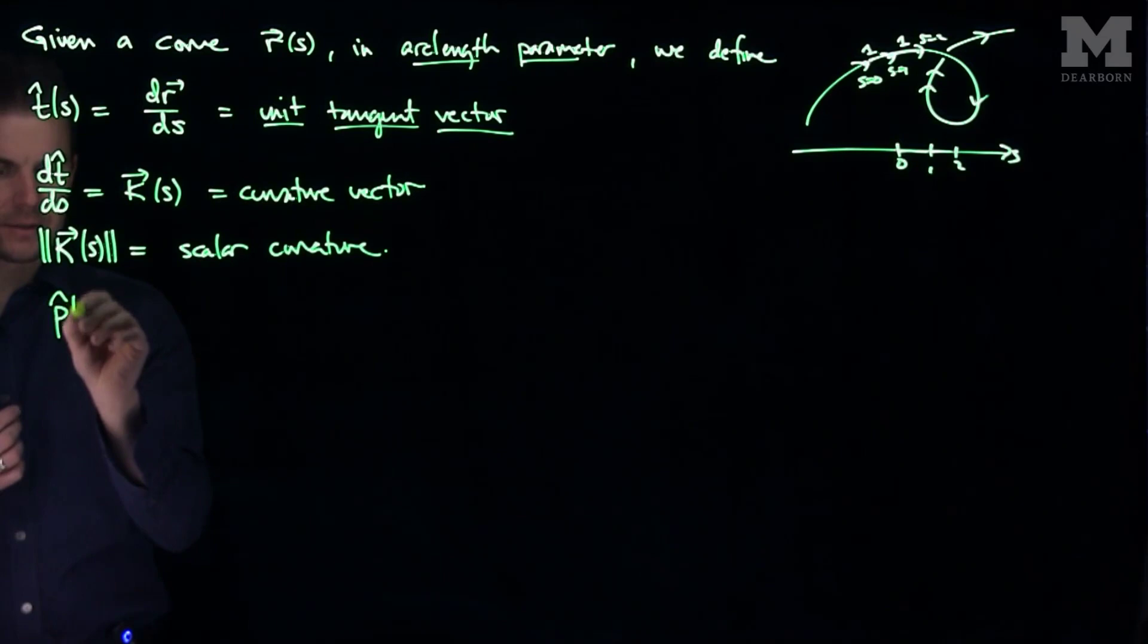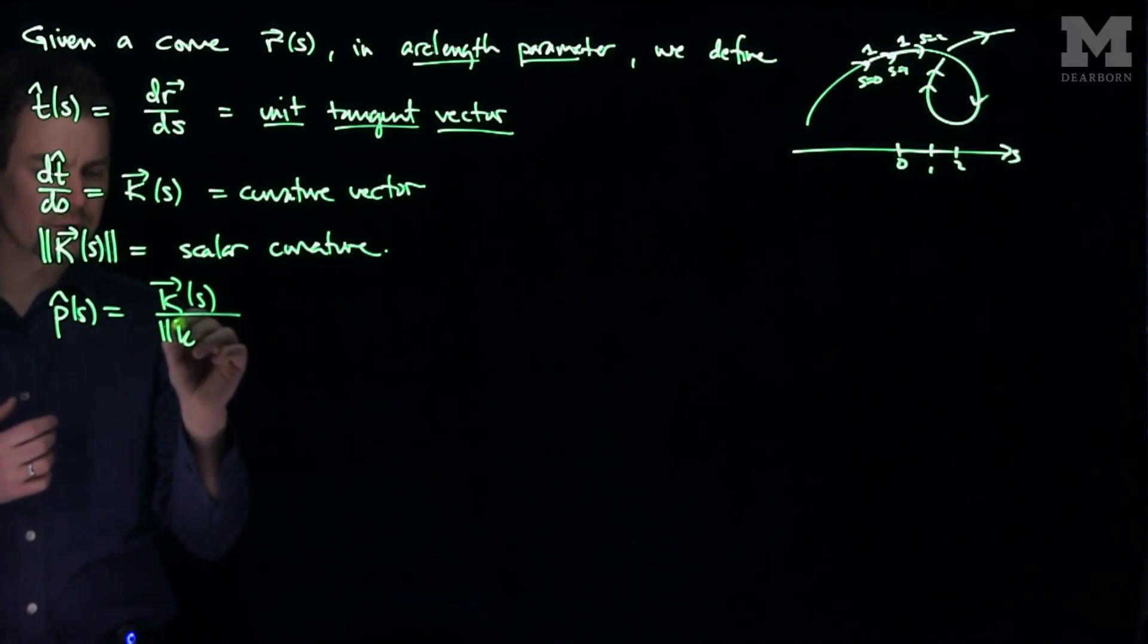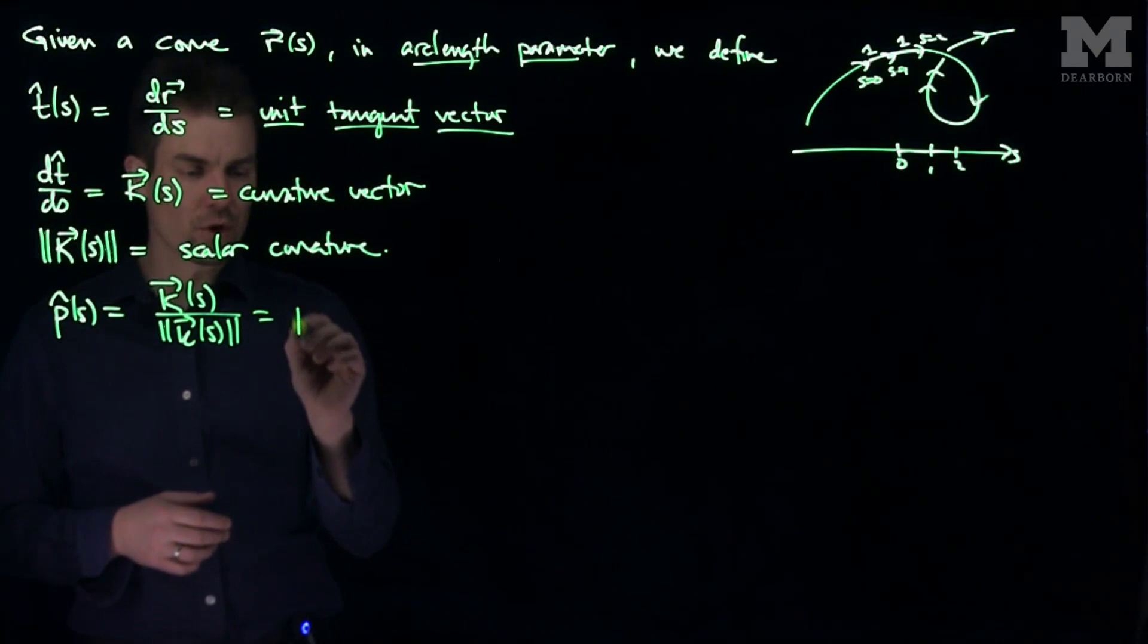Once we have the scalar curvature, we can define p hat to be equal to the curvature vector divided by the length of the curvature vector. So this forces it to be a unit vector. You divide a vector by its length, it becomes a unit vector. And this is called the principal normal vector.